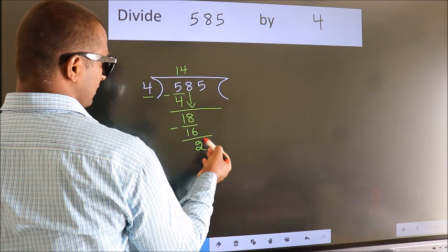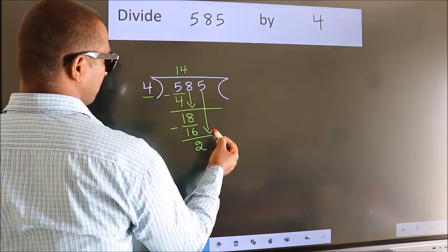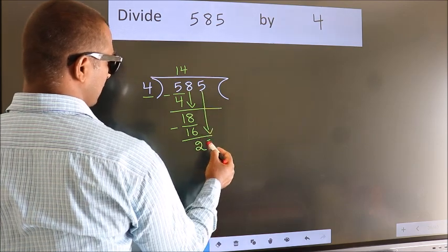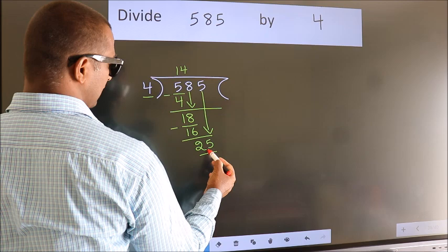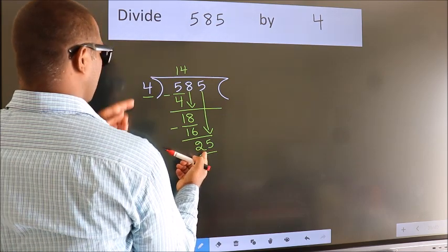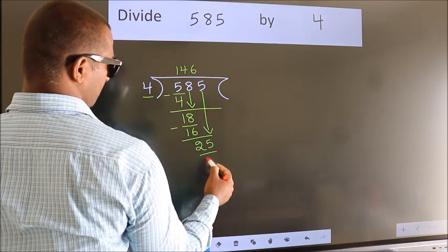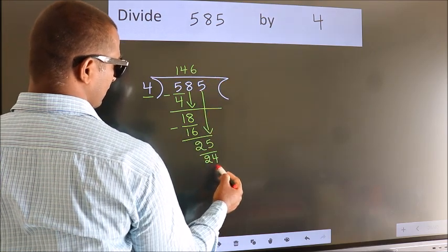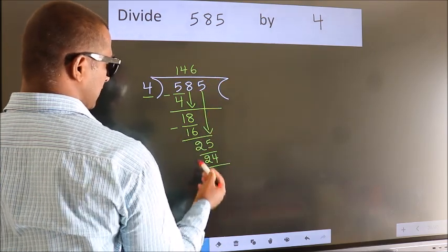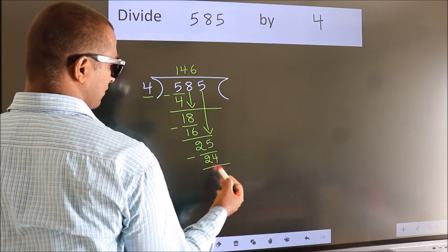After this, bring down the beside number, so 5 down, making 25. A number close to 25 in the 4 table is 4 sixes, 24. Now we subtract and get 1.